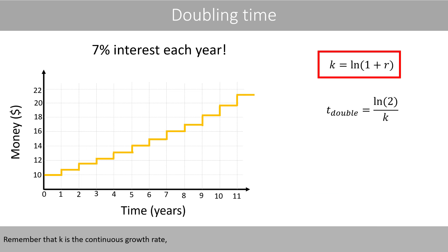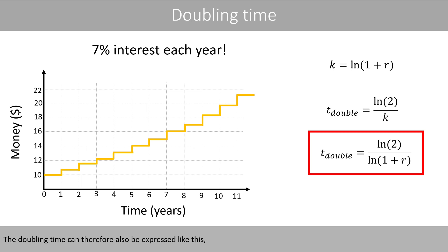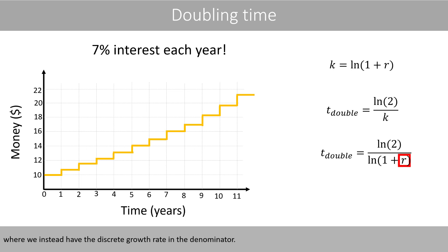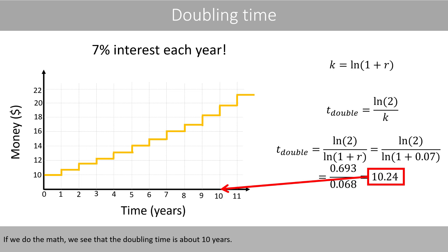Remember that K is the continuous growth rate, which can be calculated from the discrete growth rate. The doubling time can therefore also be expressed using the discrete growth rate in the denominator. For an interest rate of seven percent per year, if we do the math, we see that the doubling time is about ten years.